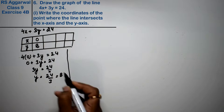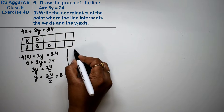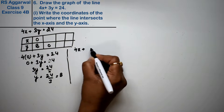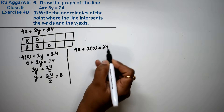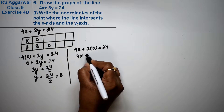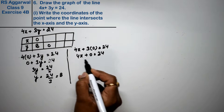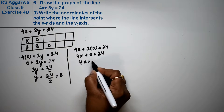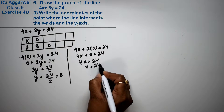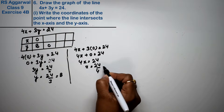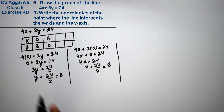Now, if we set y to 0, then what will happen? 4x plus 3 into 0 equals 24. So 4x plus 0 equals 24. Because 3 times 0 is 0, then 4x equals 24, so x equals 24 divided by 4, which is 6.